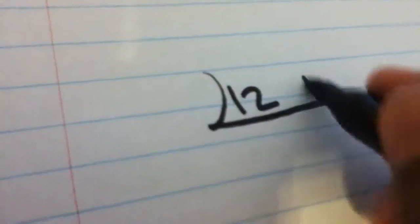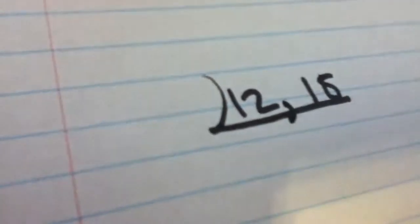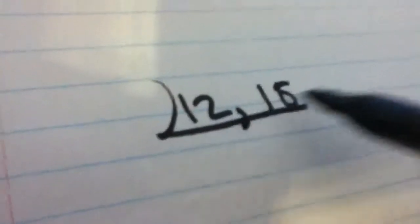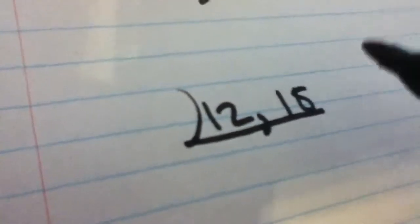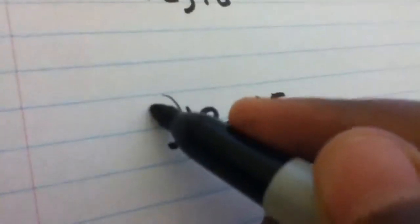I'll be using 12 and 18. First step is to make an upside down division sign, put 12 and 18 in it, then think of a number that can go into both of them. Right now I'll just use 6.